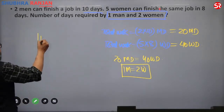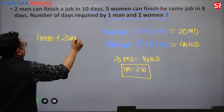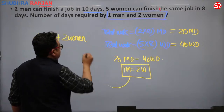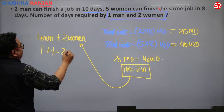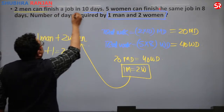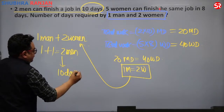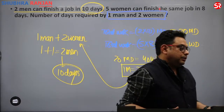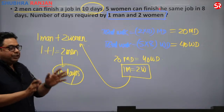Number of days required by 1 man and 2 women: since 2 women equals 1 man, we have 1 man plus 1 man equals 2 men. They have already given that 2 men finish the job in 10 days, so the answer is 10 days. Whether you convert to men or women, the answer is the same.